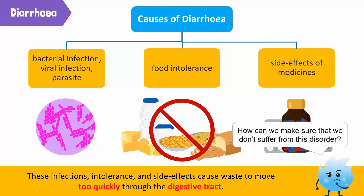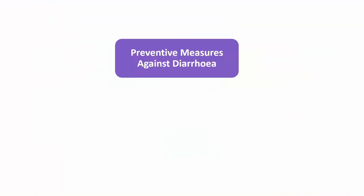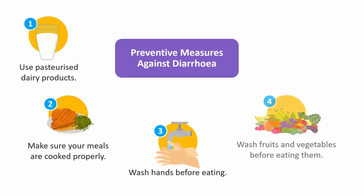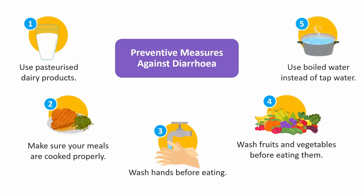How can we make sure that we don't suffer from this disorder? Here are some of the preventive measures you can take: Use pasteurized dairy products. Make sure that your meals are cooked properly. Wash your hands so that they do not contaminate your food. Make sure to wash fruits and vegetables before eating them. Avoid drinking tap water — make sure to use boiled water instead.